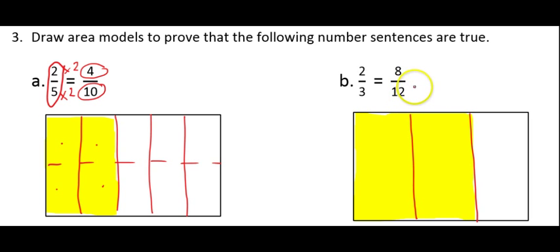I need to show that it is equivalent to 8 twelfths. Well, I have to think, how am I going to turn my thirds into twelfths? Since 3 times 4 gives me 12, that means I need to draw 4 rows. So, I'm going to divide my model into 4 rows.